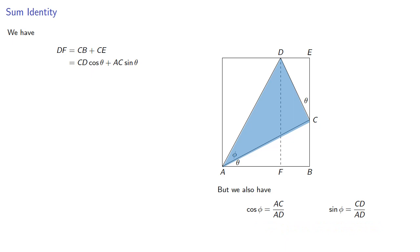And so we can find AC and CD, which will be. And substituting them back gives us, and if we divide everything by AD we get.